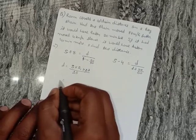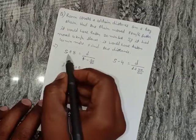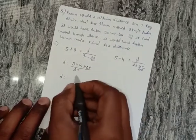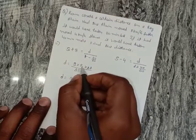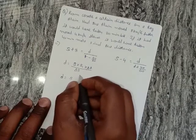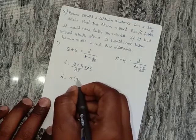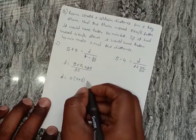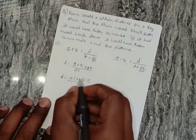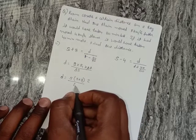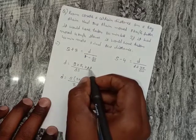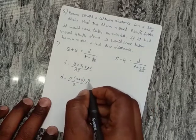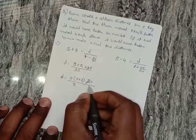For the first equation: the initial speed is S, the new speed is S plus 8, the change in speed is 8 km, and the change in time is 20 minutes — that is, 20 divided by 60 hours.